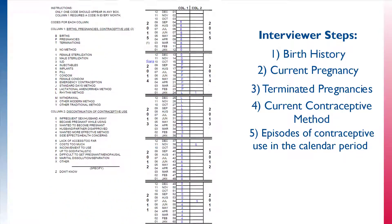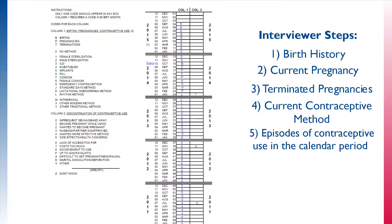Now that all the months up to the month of the interview have a code for a birth, termination, pregnancy, contraceptive method, or non-use of a method in column 1, and each discontinuation of a method is recorded in column 2, the calendar is complete.